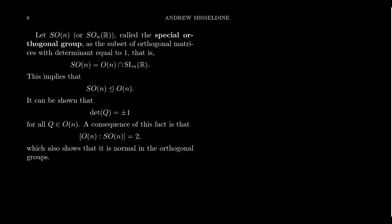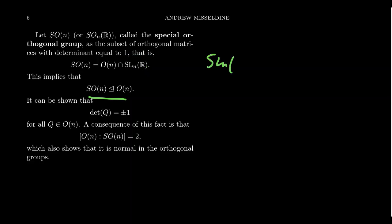Related to the orthogonal group is the so-called special orthogonal group. 'Special' means the determinant is one. The special orthogonal group, denoted SO(N) or SO_N(R), is the subset of orthogonal matrices whose determinant equals 1. In particular, SO(N) is the intersection of O(N) with SL_N(R) — the orthogonal group intersected with the real special linear group. As such, SO(N) is a subgroup of O(N), and it will also be a normal subgroup because SL_N is normal inside GL_N.